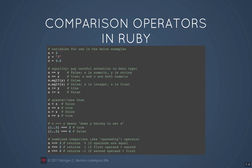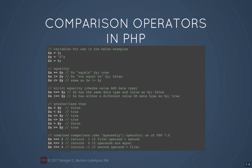Ruby also has another operator called the combined comparison operator, also known as the spaceship operator. If the two operands are the same, you get a zero. If the left one is greater than the right one, you get a 1, and if the left one is less than the right one, you get a negative. PHP is pretty much the same as what you've seen so far. It has a double equals and triple equals similar to JavaScript. It also has two versions of the not equal sign: one with the exclamation point equals and one using less than greater than signs. The newest version of PHP 7.0 also introduced the spaceship operator like in Ruby, and it behaves the same way.